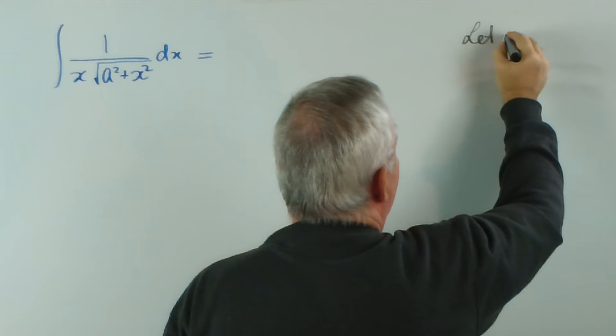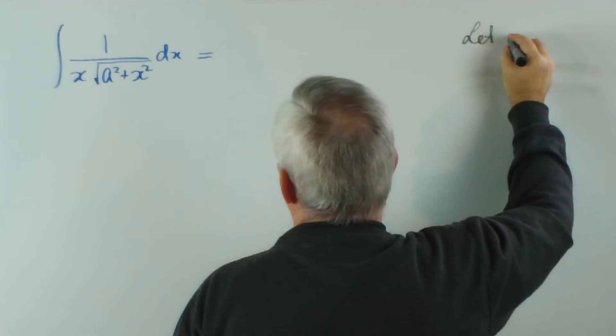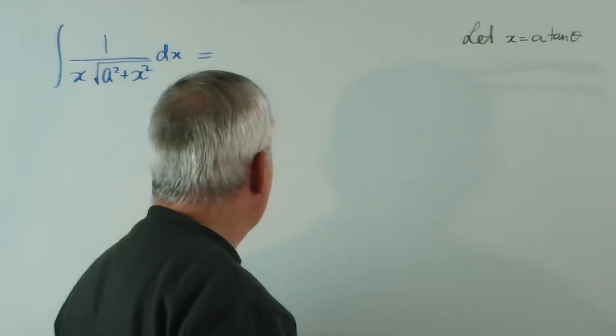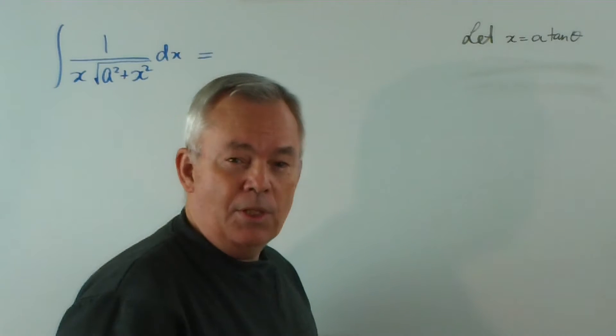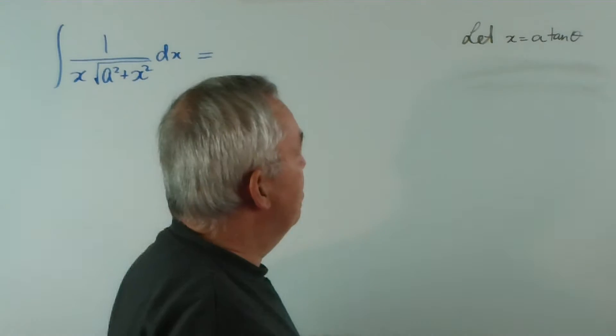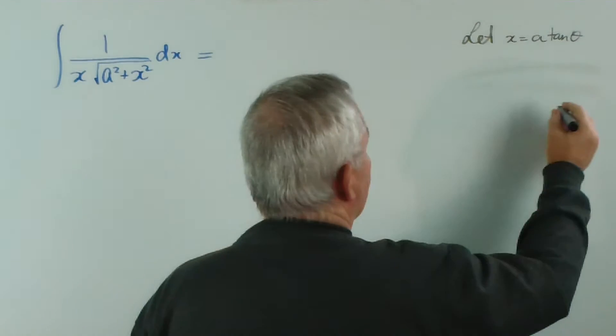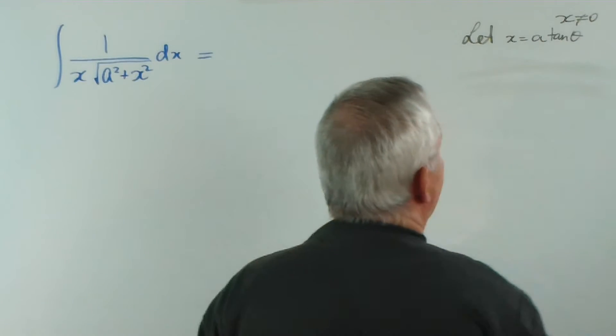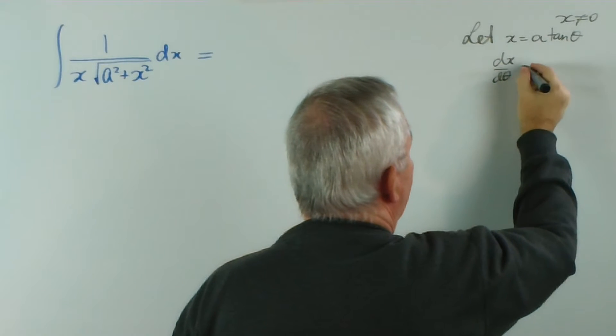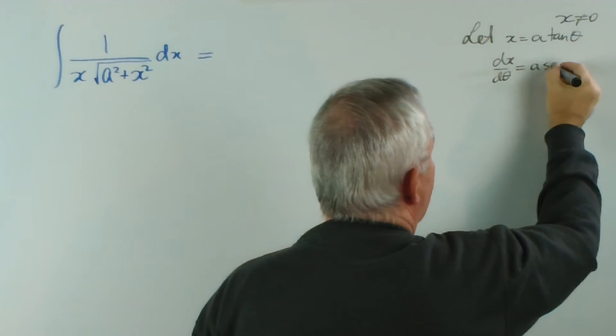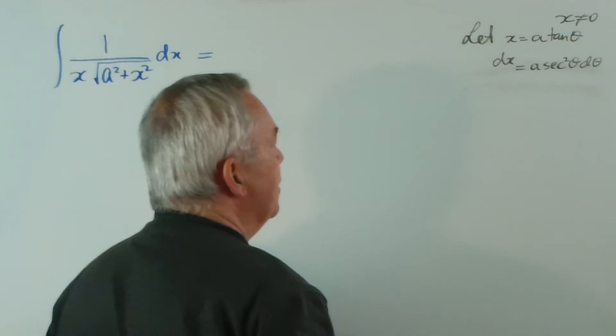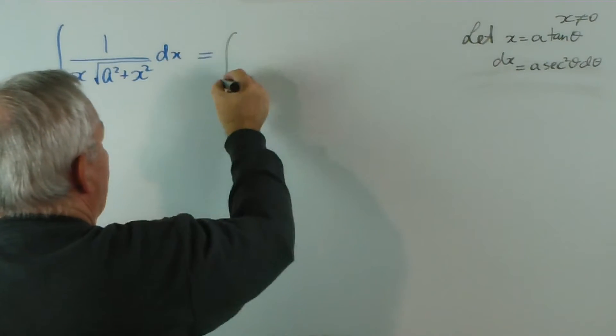We're going to start by letting x equal a tan theta. Now you can see that x can assume any value we wish except zero, because a squared plus x squared is always positive, so that's not a particular problem. I might just note here that x can't be zero. What is dx d theta? Well, it's a sec squared theta. And in fact, to save writing an extra line, I'll put the d theta up there.